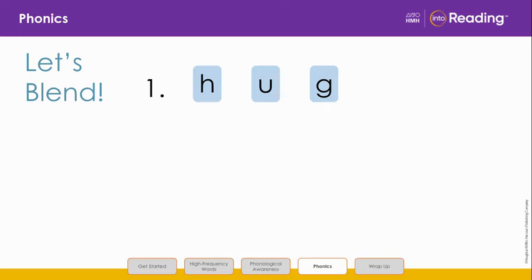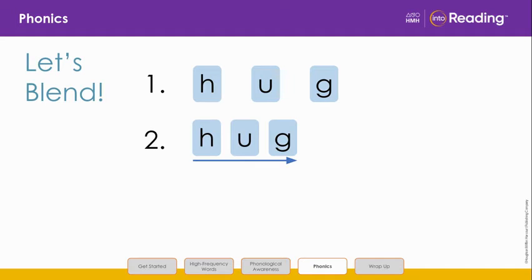We are going to blend the letters in line 1 to read another word. Say the letters and sounds with me: H, H, U, AH, G, G. This word also has the CVC pattern. Let's slide the letters H, U, G close together to form the word in line 2. Remember that this word has the CVC pattern, so the vowel sound will be short. Listen as I slowly blend each sound and then read the word: H, U, G.